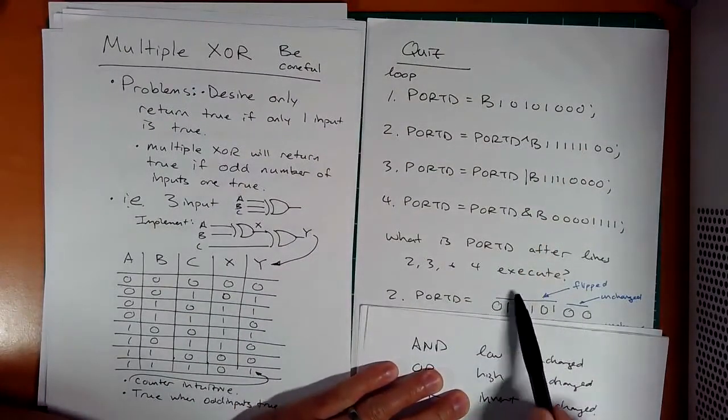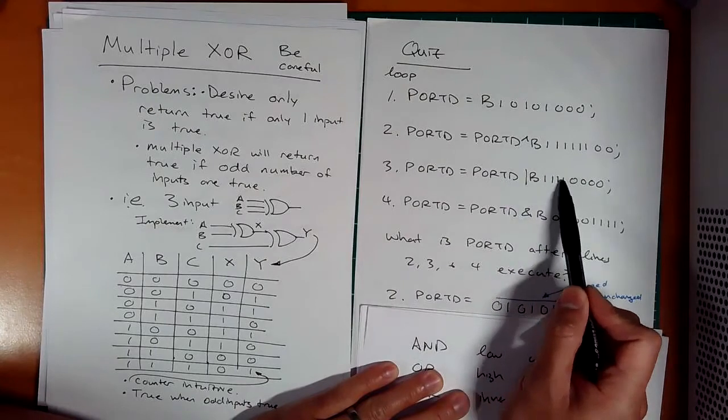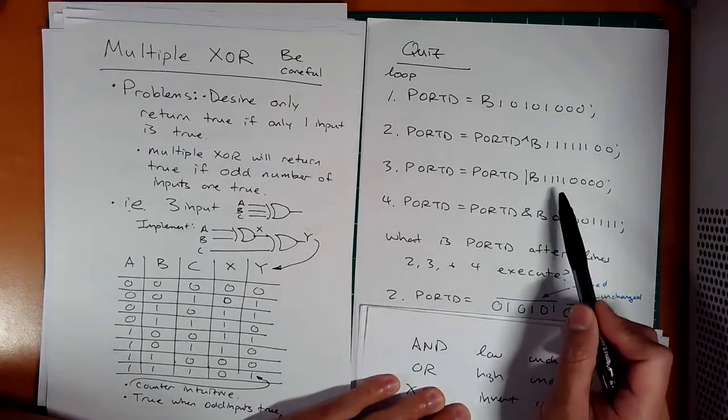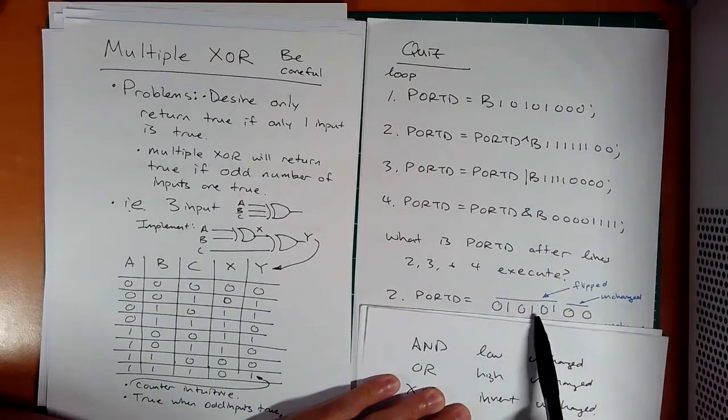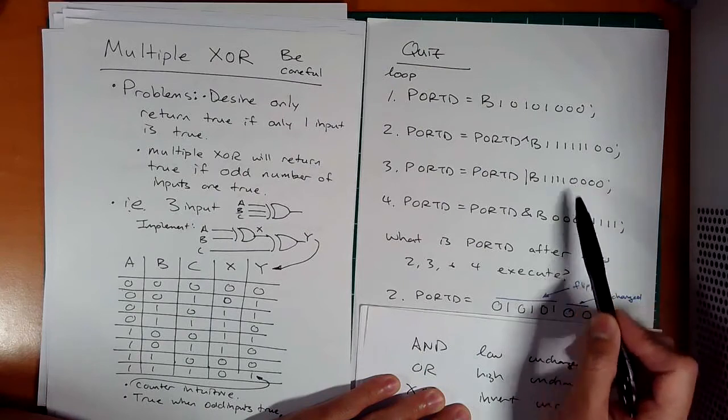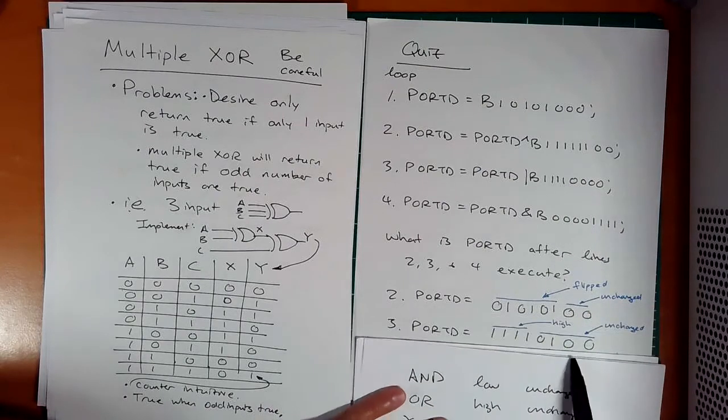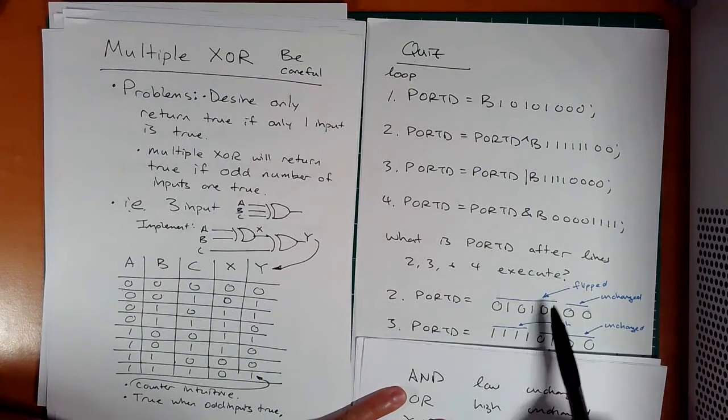Now if I take this and do an OR with this one, what does an OR do? I'm going to raise everything high where these bits are. That means the last 4 here are going to be raised high no matter what. And these 4 are going to be left unchanged. 0, 1, 0, 0. And these are going to be made high.